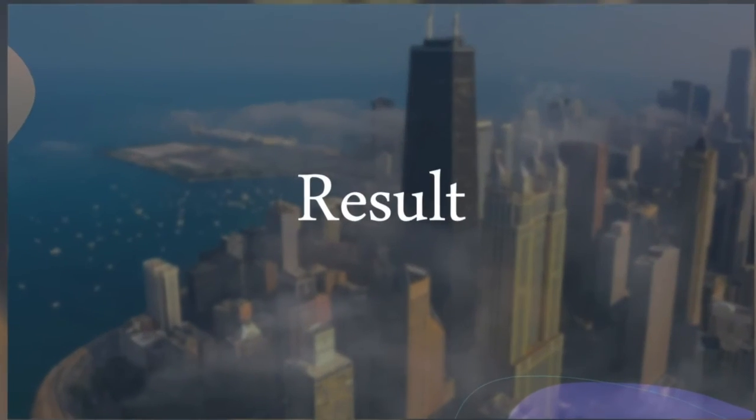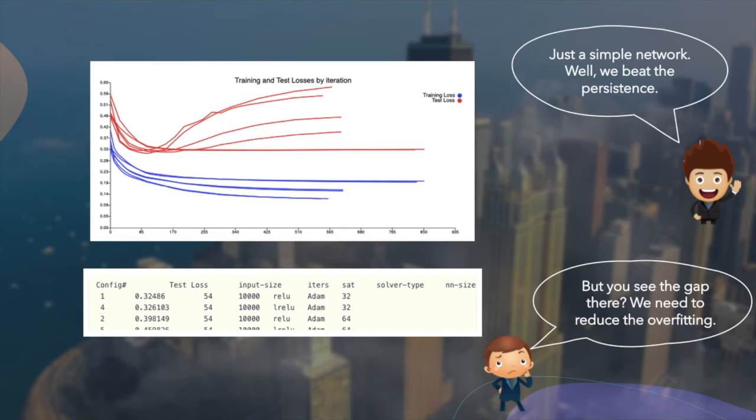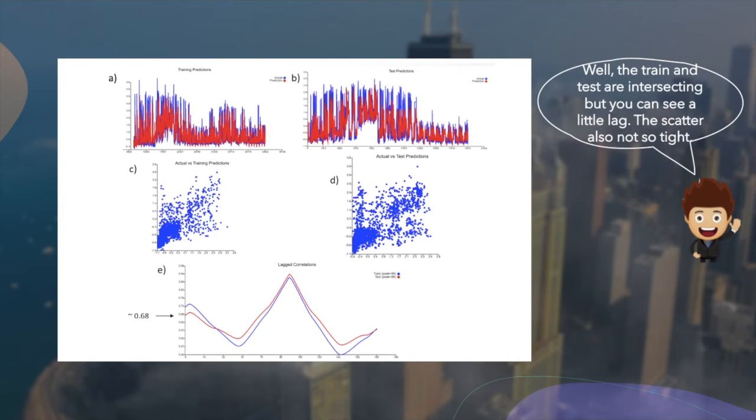Now let's talk about the result. Our model managed to get the test loss of 0.32, which is less than the persistence of 0.37. This means that our model is a quite good predictor for future energy consumption. However, notice from our test loss graph that our model is actually overfit. Further investigation shows that not only it is overfit, it also have a problem in its lag, which only have a lag correlation of 0.68.